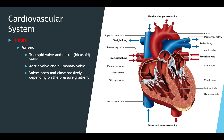Your valves — tricuspid, mitral, aortic, and pulmonary — will open and close depending on the pressure gradient, from high to low. So if blood is coming into the right atrium, as the tricuspid valve opens, the blood flows from that area of high pressure in the right atrium into the area of low pressure. An animation coming up will give you a better representation of what's being explained.